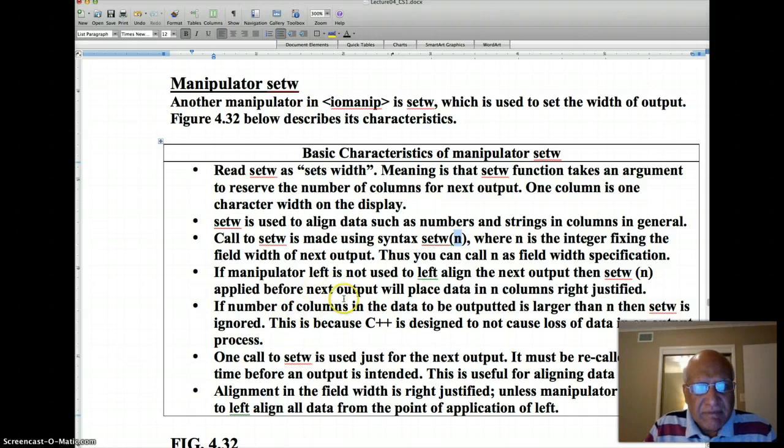If you don't apply left before your next output, your output is automatically right justified inside the n field width. However, if actual number of columns or characters in the data to be outputted is larger than n, which is the field width specification, then setW is ignored because C++ is designed not to cause loss of data in an output process. You could specify precision in floating point, but that's not a loss of data. You're just putting a mask in front of the data.